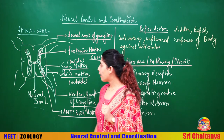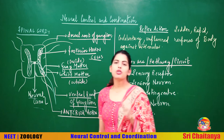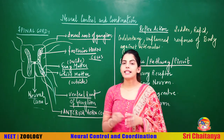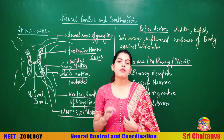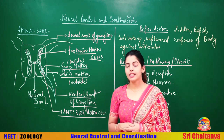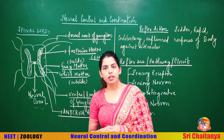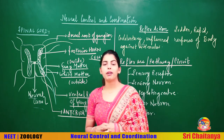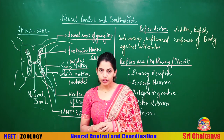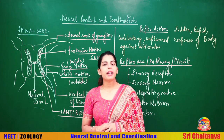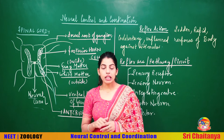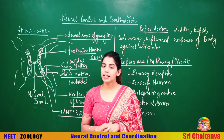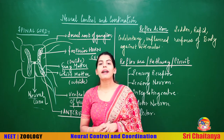The central canal, which is the neural canal, is very important because the fluid called CSF is present in the ventricles of the brain as well as in the central canal. Now, from the brain certain nerves come — called cranial nerves. From the spinal cord, the nerves that arise are called spinal nerves.